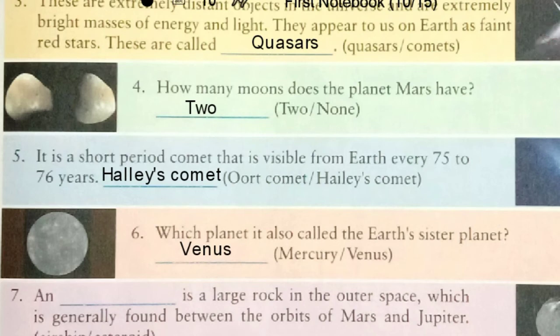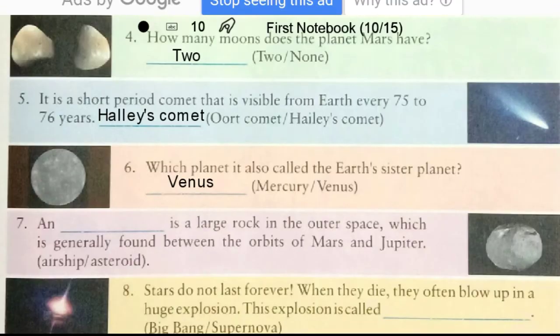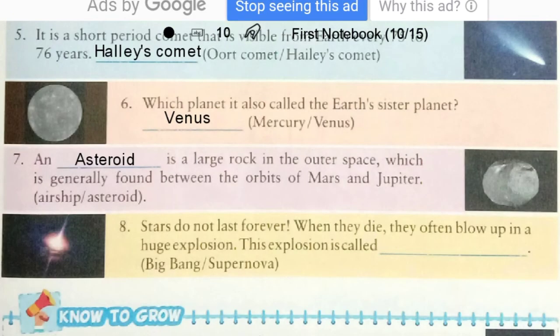Question 7: A large rock in outer space generally found between the orbits of Mars and Jupiter — this is an asteroid. Question 8: Stars do not last forever. When they die, they often blow up in a huge explosion. This explosion is called a supernova. With this we have completed Exercise 29.